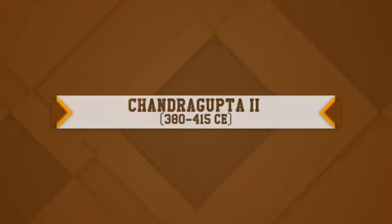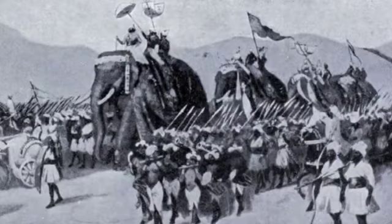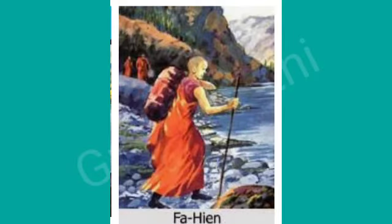Samudragupta was succeeded by his son Chandragupta II Vikramaditya. His reign saw the highest peak of the Gupta empire. Chandragupta II inherited the military genius of his father and extended the empire through a judicious combination of diplomacy and warfare. Fa-hien, a Buddhist monk, visited India during his rule and mentioned his experiences in his work. According to him, crimes were rare in the Gupta empire and the administration was pro-people.